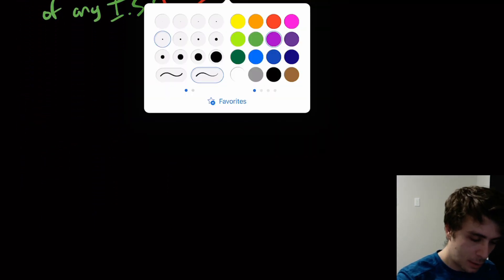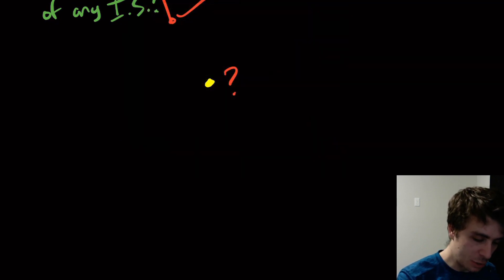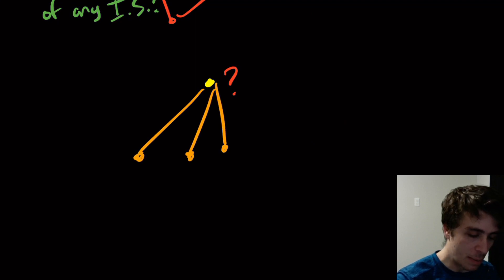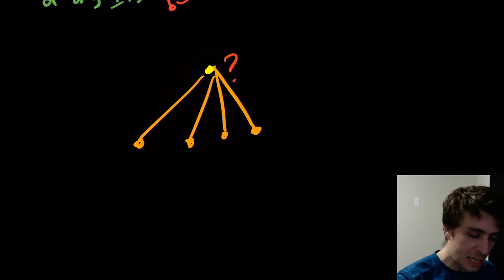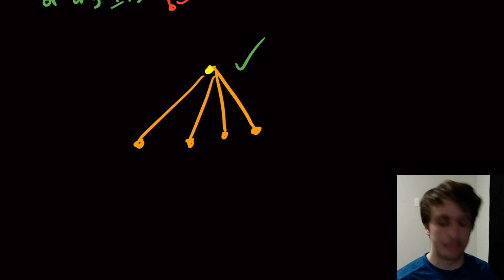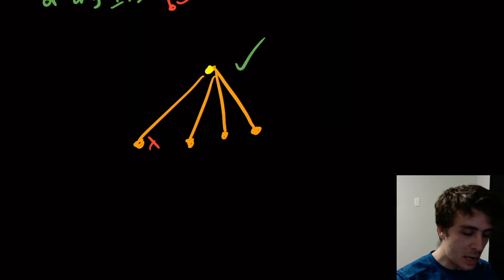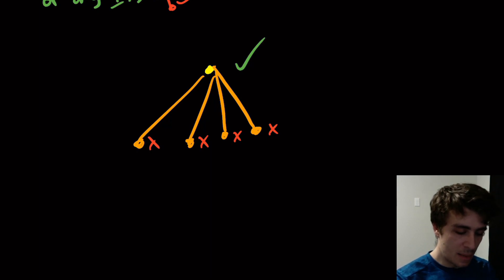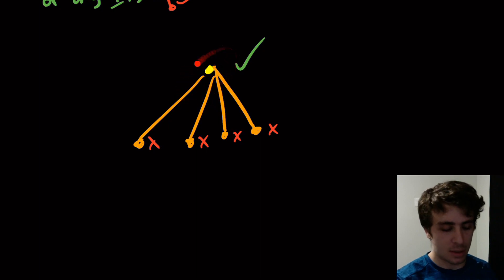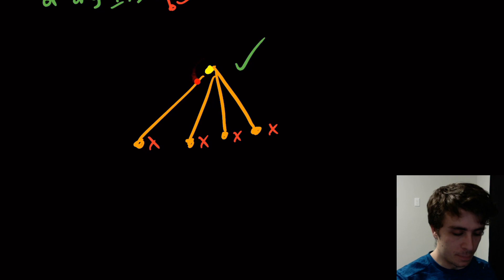Let's think about this. Say we have some vertex — shown in orange — and we're deciding whether to put it into the independent set. It may have a bunch of neighbors (vertices connected to it). If we put this vertex into the independent set, that tells us none of its neighbors can be included either, because they're connected to it and we'd have an edge between them — so it's not an independent set.